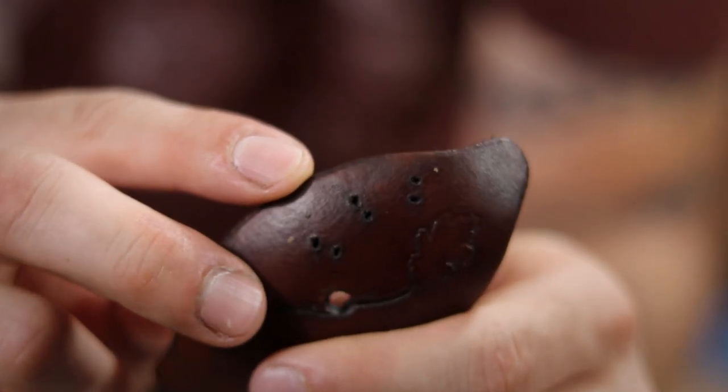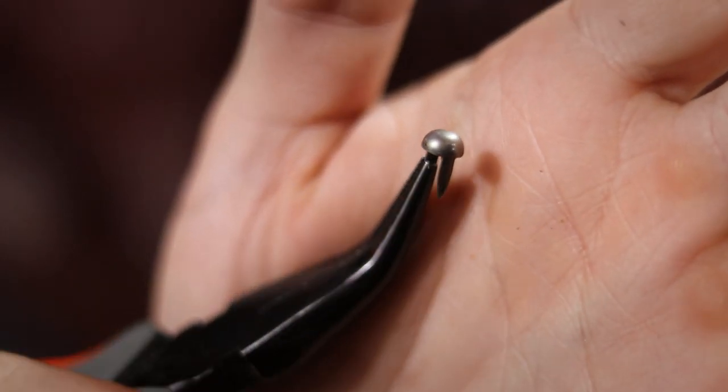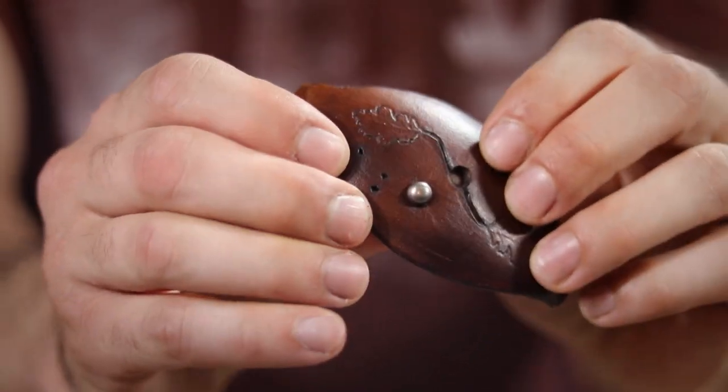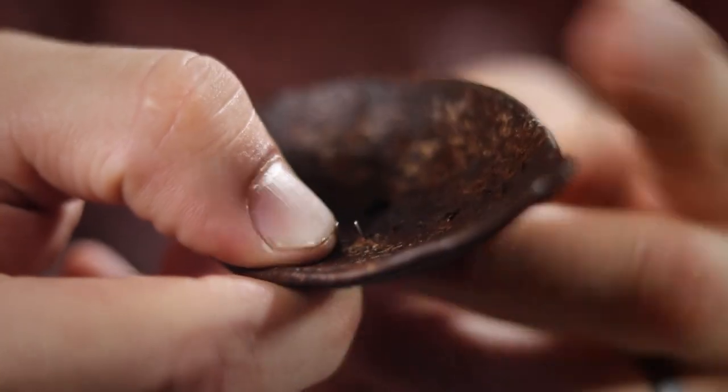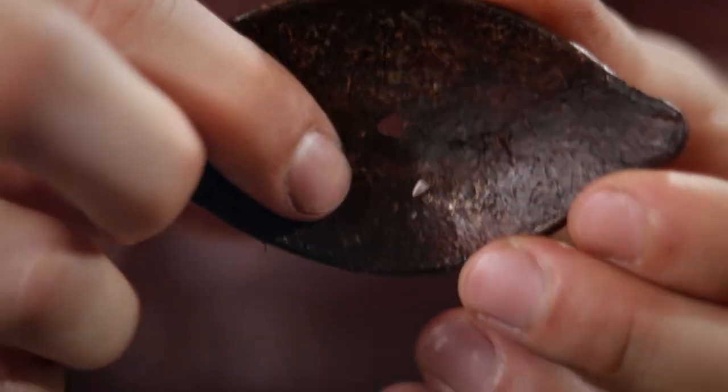With that looking sexy, it was time to put in my spots. To do this, I just pushed them through the holes that I made earlier. This exposes these little legs through the back. These you can bend over just like staples to lock the spot into place.